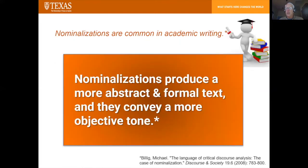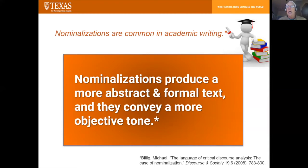Nominalizations, as it turns out, are really common in academic writing. And as a graduate student, I want to write like an academic because I'm no longer an undergrad, I'm a graduate. So I start imitating academic articles and the next thing I know, I have nominalizations all throughout my work. And that's okay. The reason why academics like nominalizations is because they produce a more abstract or formal text, and nominalizations convey a more objective tone — it lifts the writing up to an academic level.